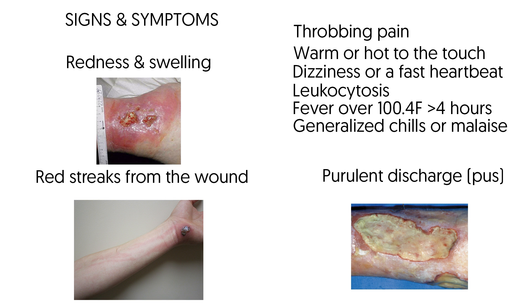The area may be warm or hot to the touch. Purulent discharge or pus collected beneath the skin or draining from the wound is also a sign. A small amount of clear or slightly yellow colored fluid can be expected from a surgical wound, but if the fluid is cloudy, green, or foul smelling, this indicates an infection. Other signs include dizziness or a fast heartbeat, generalized chills or malaise, and a fever over 100.4 degrees Fahrenheit for more than four hours — these are signs of a localized systemic infection.